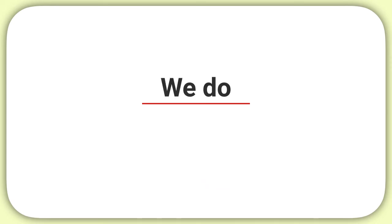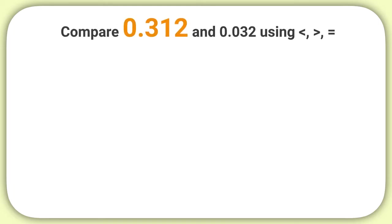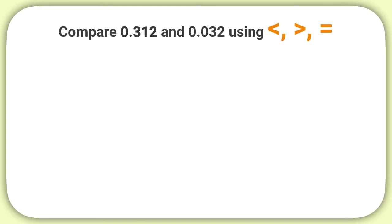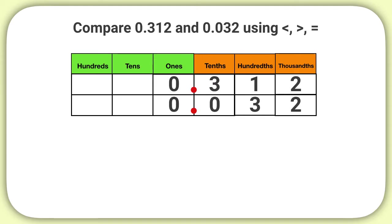Let's do one of these together now. Compare 312 thousandths and 32 thousandths using the less than, greater than, or equal to symbol. First, I'll set up a place value chart and start by putting each digit of the first number into the chart. Then I'll take the second number and place each digit into the place value chart as well. I need to make sure that the decimals are lined up before I can go any farther.